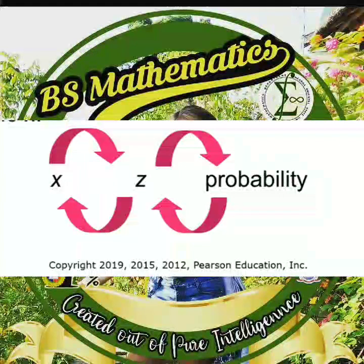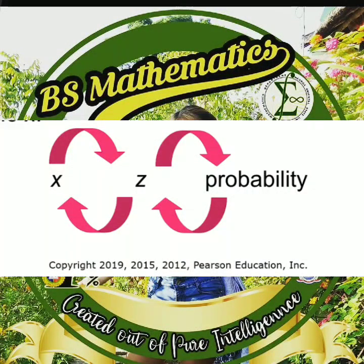From the previous section, we were given a normally distributed random variable x, and we were asked to find a probability. So in this section, we will be given a probability, and we will be asked to find the value of the random variable x.